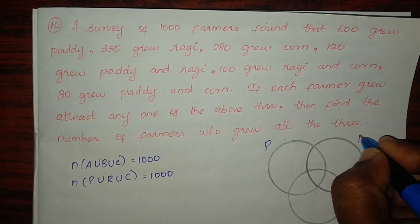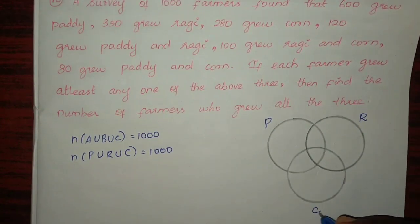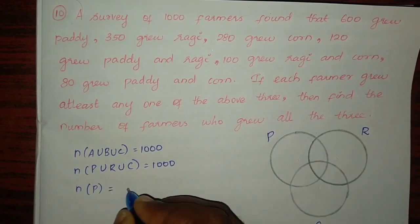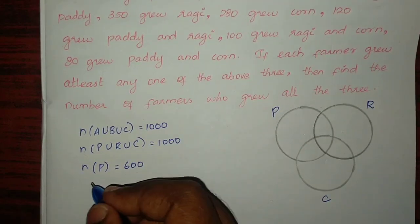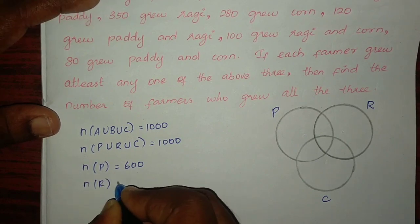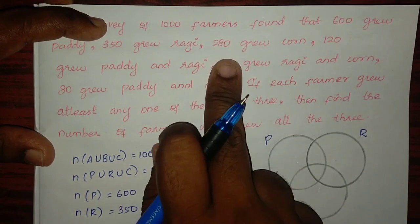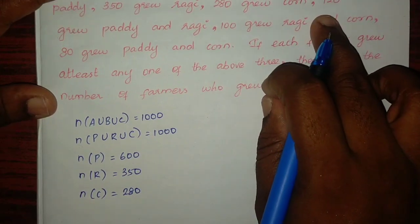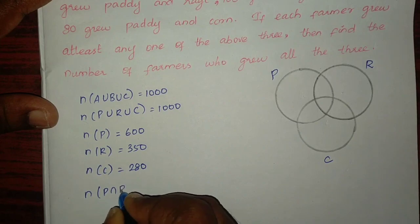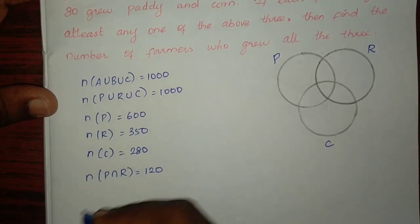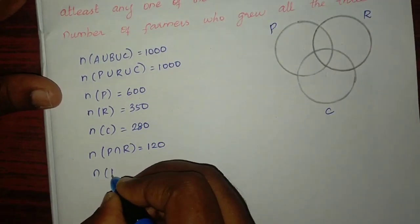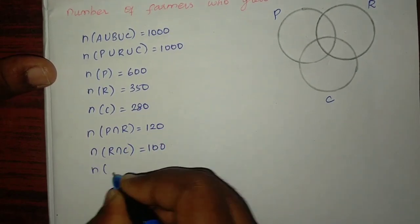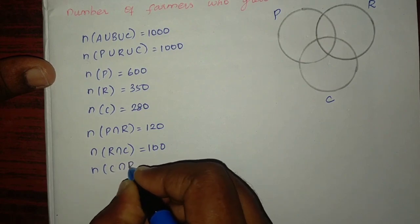Let paddy be P, ragi be R, and corn be C. n of P equals 600, n of R equals 350, n of C equals 280. n of P intersection R equals 120, n of R intersection C equals 100, n of C intersection P equals 80.